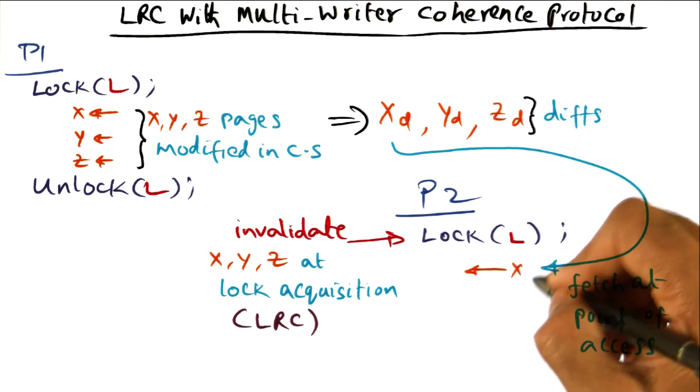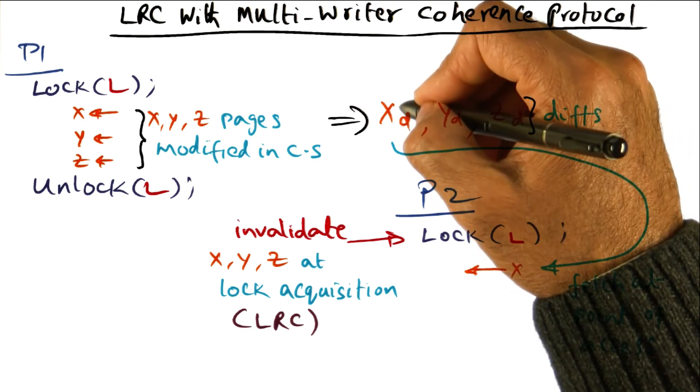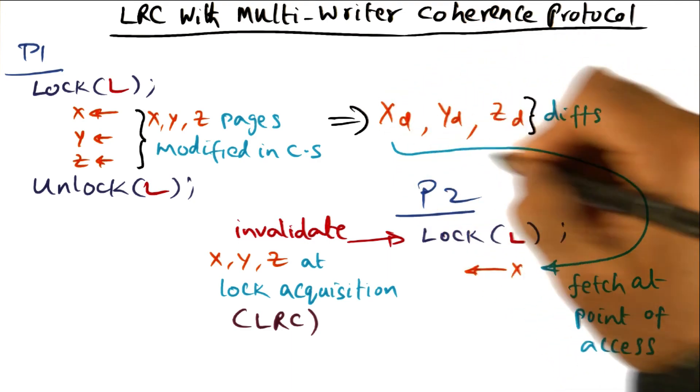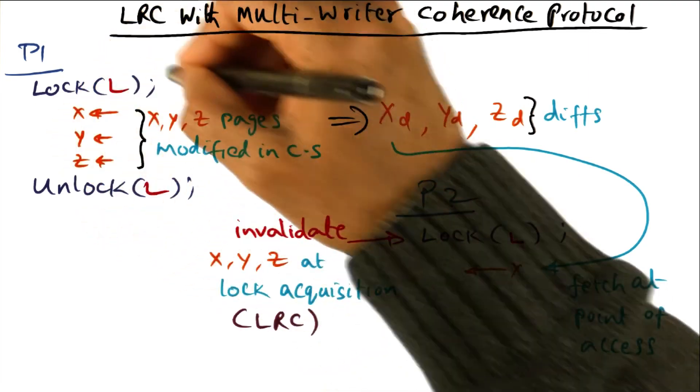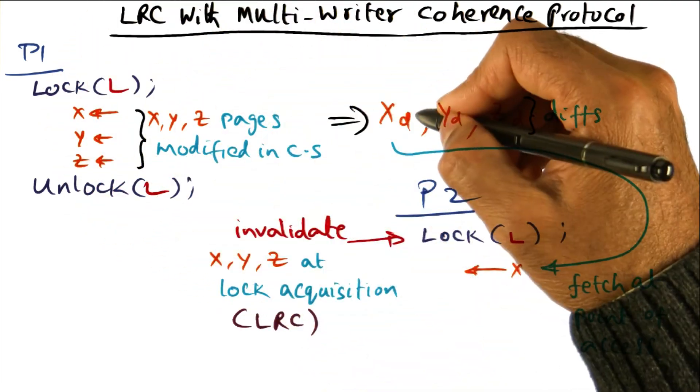The DSM software knows who the owner of the page is. From the owner of the page, I can get the original content of X. I'll do that. But I'll also go and get the diff that is created by the execution of the previous critical section by the previous lock holder.